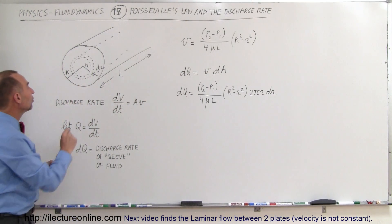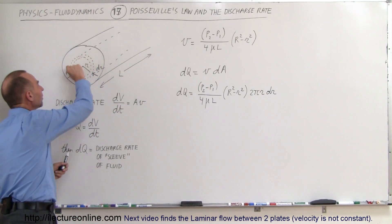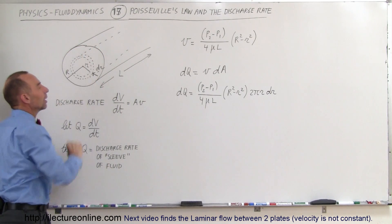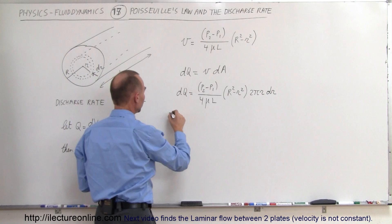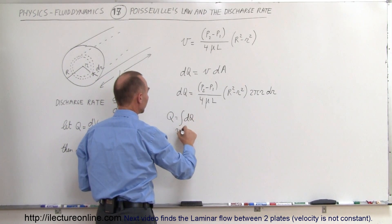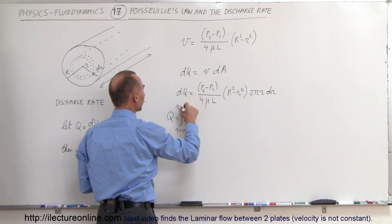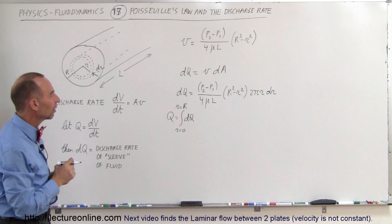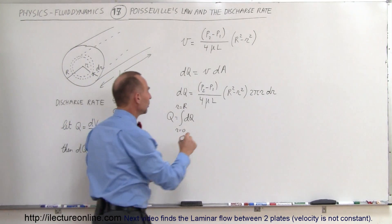So that would be the discharge rate of just a small little amount. Now we want to have for the entire pipe to go and integrate from little r to big R. So that means that q is going to be the integral of dq going from r equal 0 to r equal R. We're going to integrate over the entire radius of the pipe.